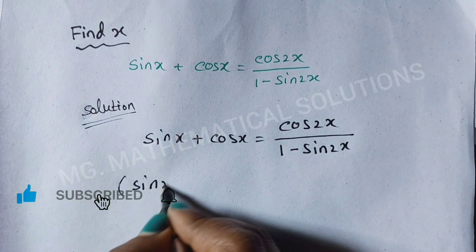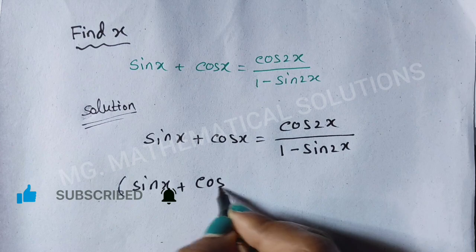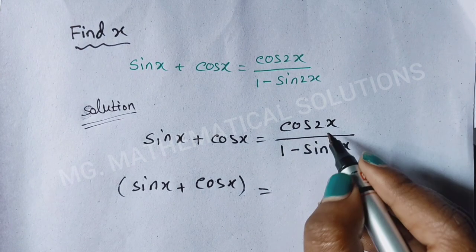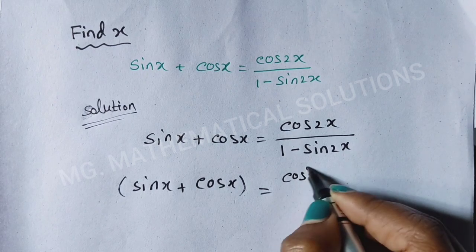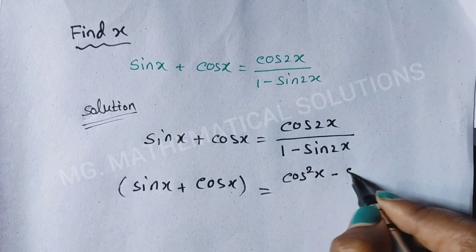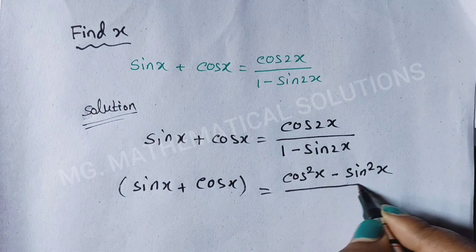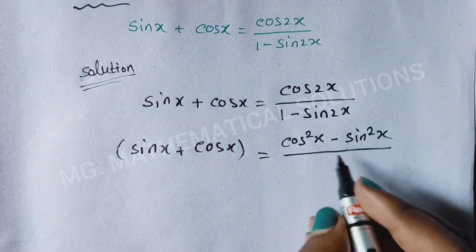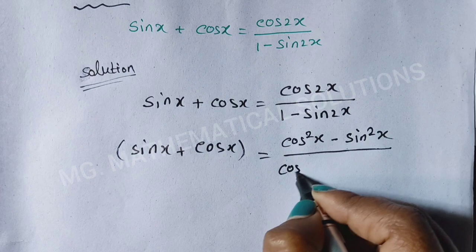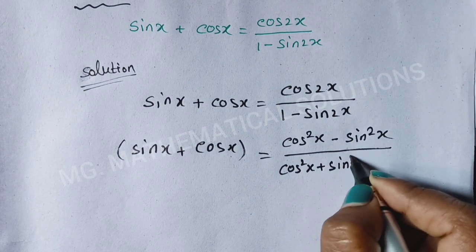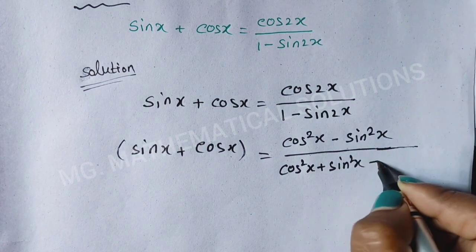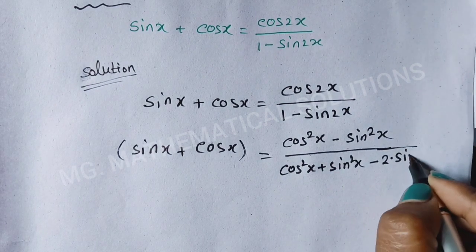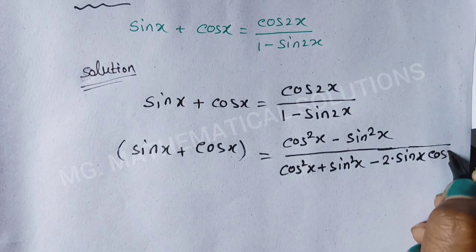Sin x plus cos x equals — now we use the formula of cos 2x, which is cos²x minus sin²x, over 1, which we can write as cos²x plus sin²x minus sin 2x, that means 2 sin x cos x.